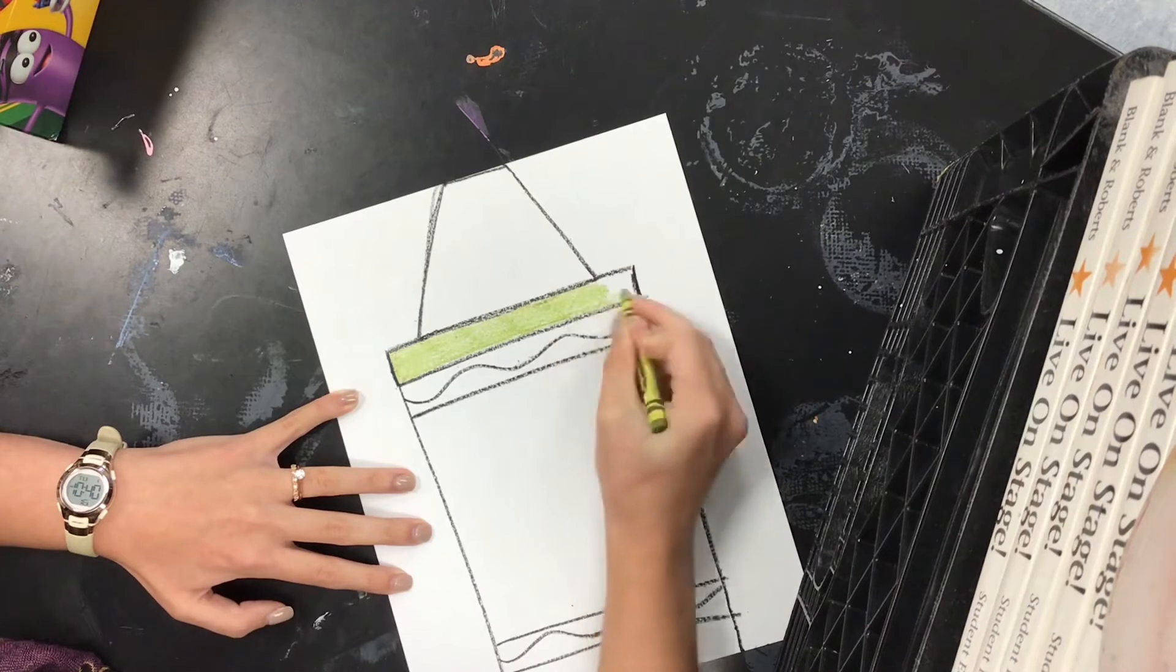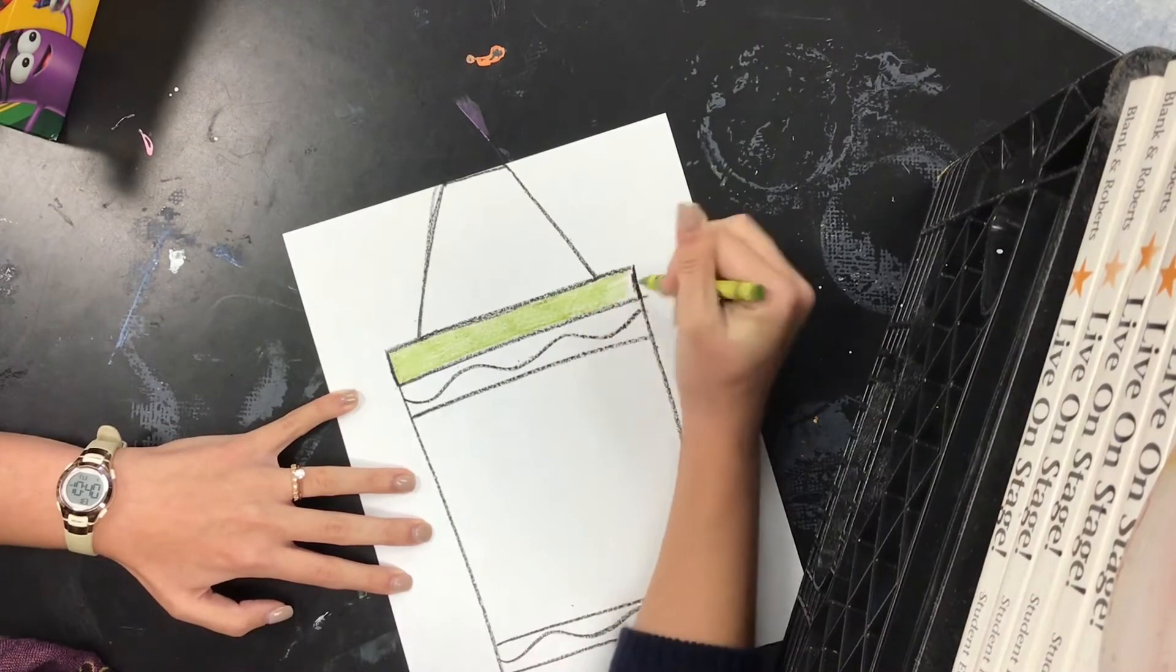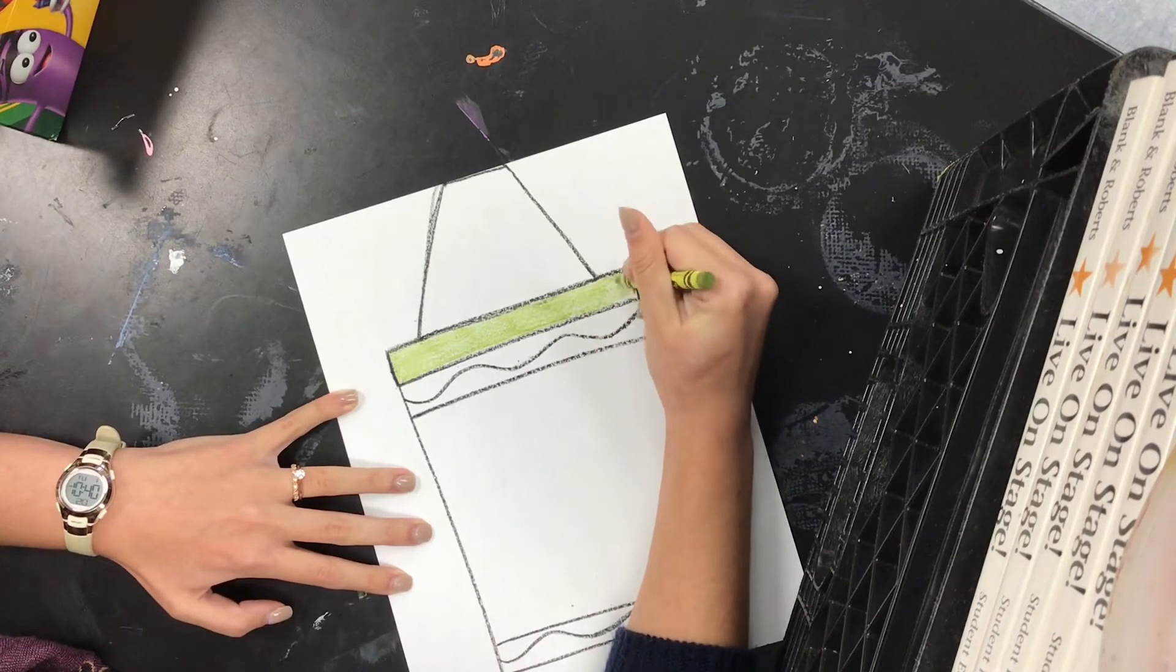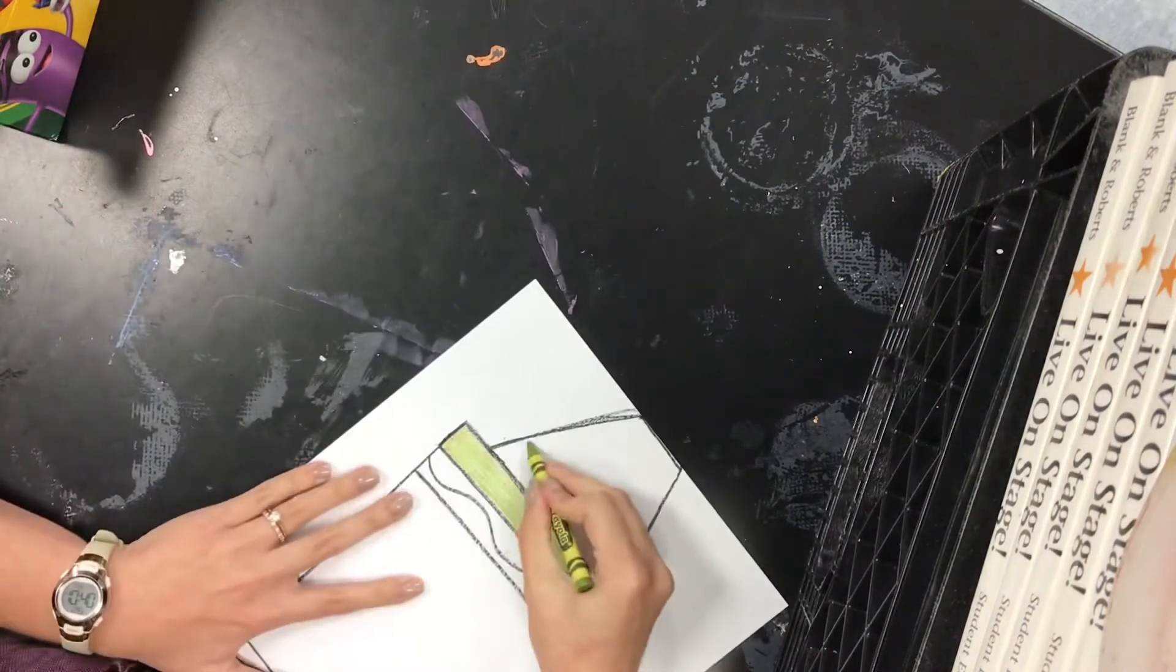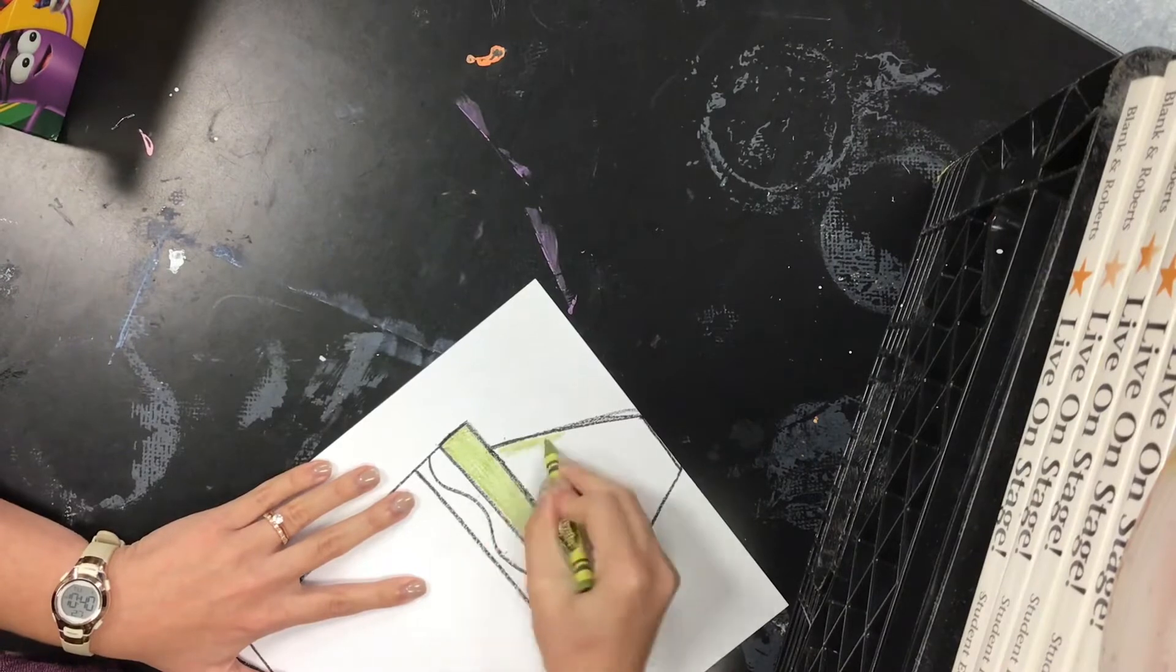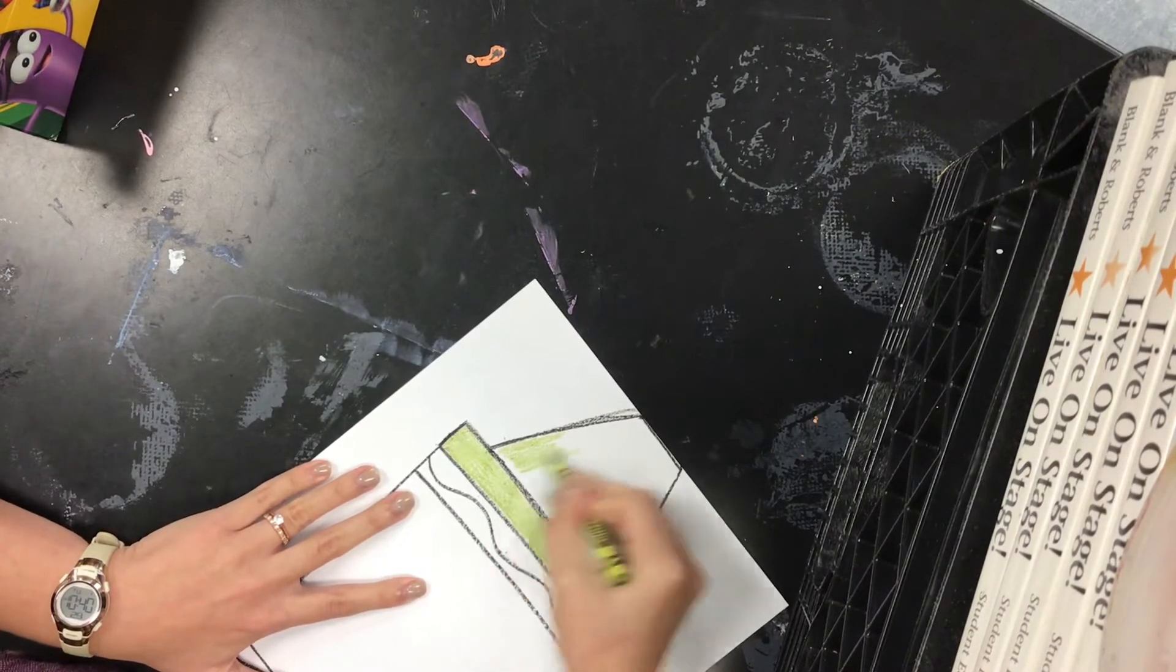So I'm going to color in the top part of my crayon and the very bottom, but I'm leaving the middle blank. I'm going to speed this up a little bit so that you can see me color before we move on.